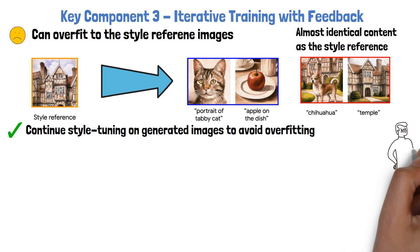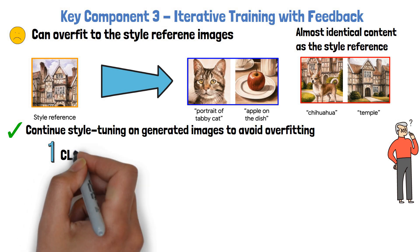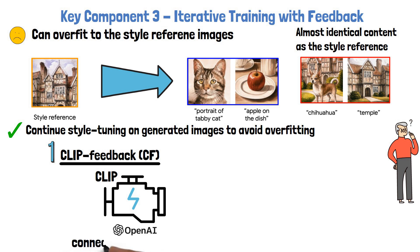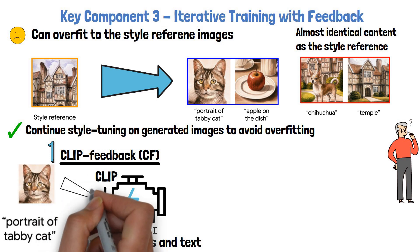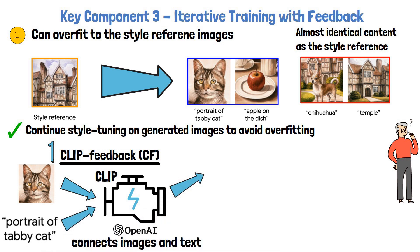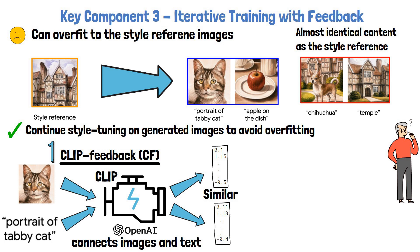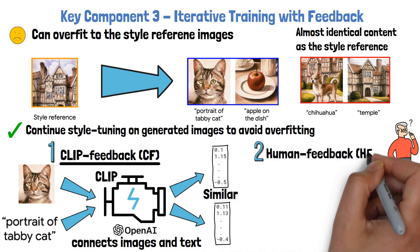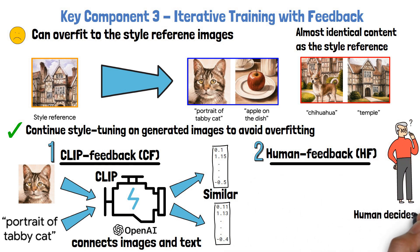But how do they know which images are of high quality? They came up with two approaches. One is called CF, short for CLIP Feedback. CLIP is a model by OpenAI which connects text and images to one embedding space. So they take the prompt and generated image and feed them to CLIP. They get an embedding for the prompt and an embedding for the image in CLIP embedding space. If the embeddings are similar, then they count the generated image as good, as it means the image and the text prompt grasp a similar meaning. If the embeddings are not similar, they count the generated image as not good and don't use it for the remaining training process. The second approach is called HF, short for human feedback, where instead of CLIP, a human determines what generated images are of high quality.